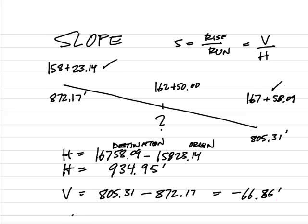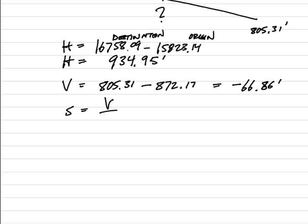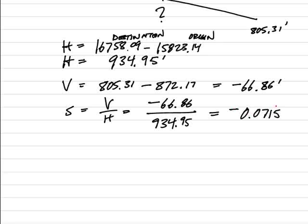All right. So we know the slope is simply going to be V over H, and I have a negative 66.86 feet divided by 934.95. When I crank this out, I get negative 0.0715 feet. That is feet per foot, or that is a slope.